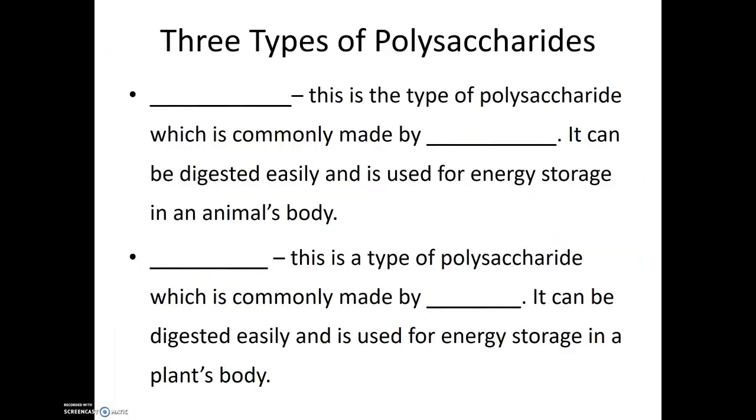There are three different types of polysaccharides. The first is glycogen. Glycogen is a type of polysaccharide commonly made by animals. It can be digested easily and is used for short-term energy storage reserves in an animal's body. In humans, the most common area for glycogen to be stored is within our liver. However, glycogen can also be stored within our muscles.